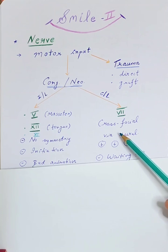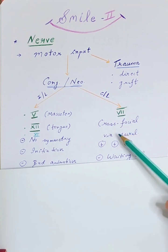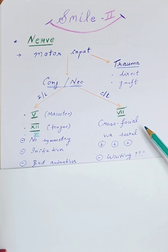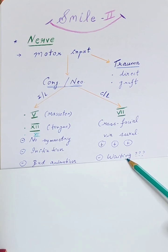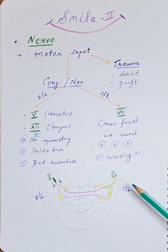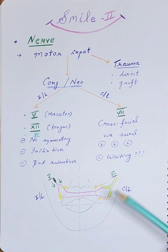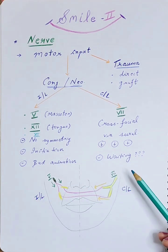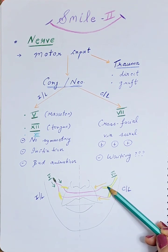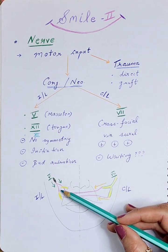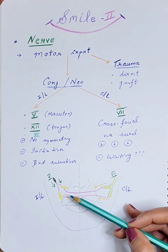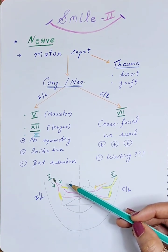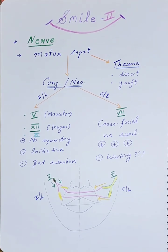In cases where we do not have facial nerve supply on the affected side, we go in for a cross-facial nerve graft, which comes from the normal, non-paralyzed contralateral side, done via a sural nerve graft. This procedure will be discussed in detail later. From the normal side, we transfer innervation via sural nerve grafts to the paralyzed side. We have to wait for the nerve to grow and innervation to take place, and what happens to the muscles during that waiting period — and how to manage it — will be covered in the subsequent video.